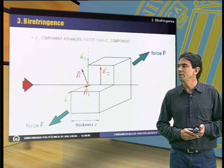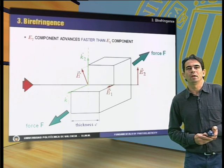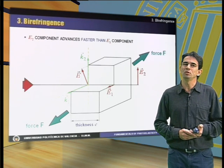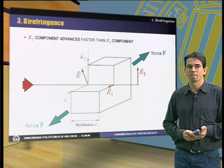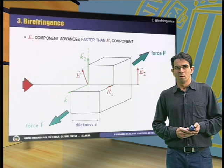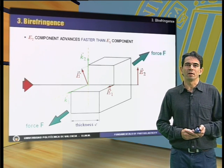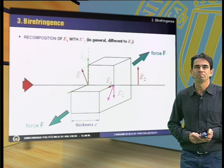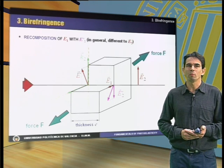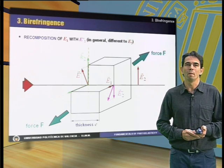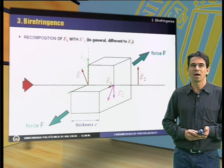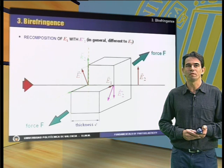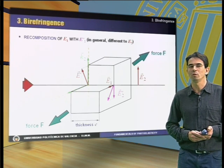In the figure, we can observe that the component E2 is the one that advances faster. Once the component E1 reaches the end of the material, it is recombined with the new component E2', which is different to the original E2 component, as a result of the out-of-phase advance produced inside the loaded material.